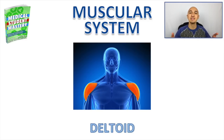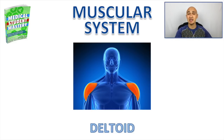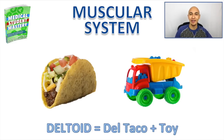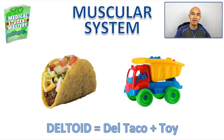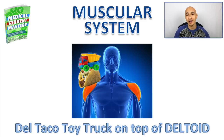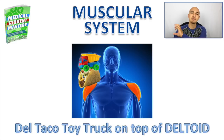Next, let's target the muscular system — specifically the deltoid. Come up with an image for deltoid: I picture a Del Taco taco and a toy. I picture a toy truck for the 'toid' part of deltoid, then associate that to the location on the shoulder. So maybe a Del Taco toy truck on top of the deltoid, dumping a bunch of tacos on it and you're grabbing them and eating them.